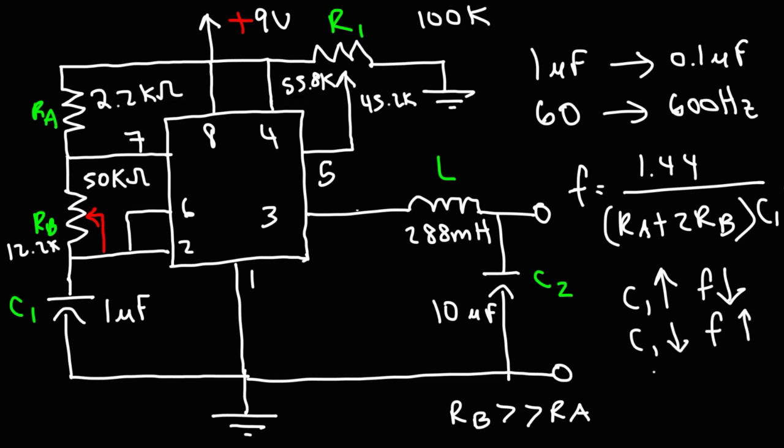Or if you decrease RB or even RA, the frequency will also go up. So you could use a 500 kiloohm potentiometer instead of a 50 kiloohm potentiometer. But if you use a higher potentiometer, it's going to be harder to adjust it to 12.2. But nevertheless, you do have some flexibility with this circuit.